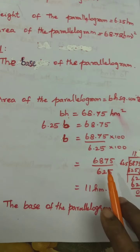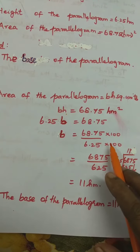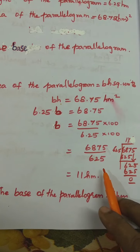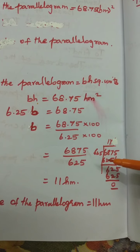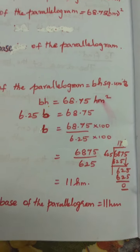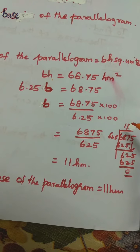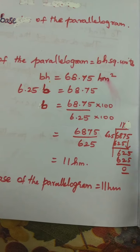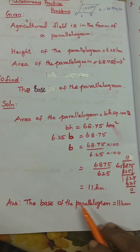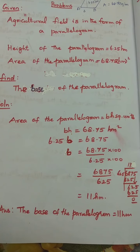Bring 6.25 to the denominator and multiply both numerator and denominator by 100 to get whole numbers: 6875 ÷ 625. Dividing: 6.25 goes into 68.75 eleven times. The base of the parallelogram is equal to 11 hectometres.